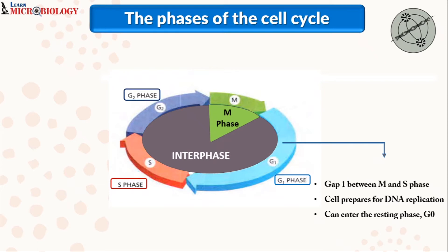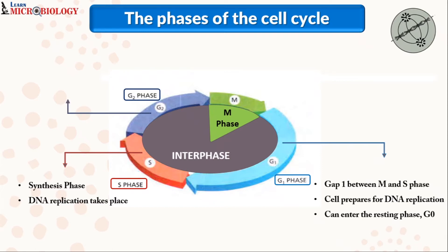The S phase is called the synthesis phase. During this phase, DNA replication takes place. The G2 phase is called the gap 2 — between the S and the M phase. During the G2 phase, the cell prepares itself for mitosis.